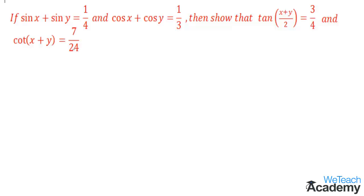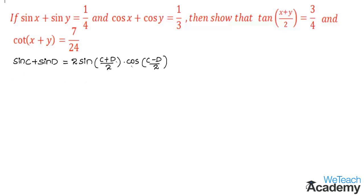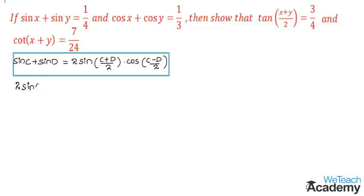To solve this example we are given two equations. Consider the first equation: sin x plus sin y equals 1 by 4. This is in the form of the formula sin C plus sin D equals 2 sin((C+D)/2) into cos((C−D)/2). Using this formula, we expand to get 2 sin((x+y)/2) into cos((x−y)/2) equals 1 by 4. Let us name this as equation 1.